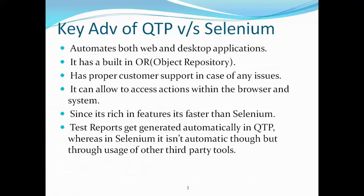Now let's look at QTP's advantages and why some companies choose it over Selenium despite Selenium being open source. QTP can automate both web and desktop applications, making it one of the best tools for desktop automation. With its rich feature set, it can directly automate web and desktop applications, requiring only a license cost. It also has a built-in object repository — as the script automates elements on the UI, it automatically adds them to the repository.